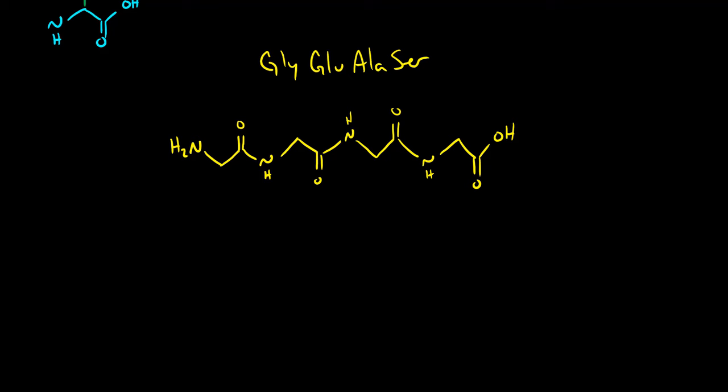I'll put in my side chains now. Glycine is a hydrogen, so I don't even really need to show it, but I will. Glutamic acid is CH2, CH2, and then we have a carboxylic acid. Alanine is just a CH3. Serine is CH2OH. So just to reinforce this one more time, when you're drawing peptides, draw the backbone first. Get that right. Once you have that, then add in the side chains.